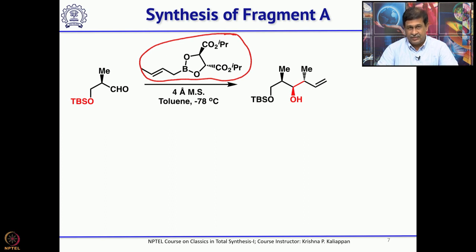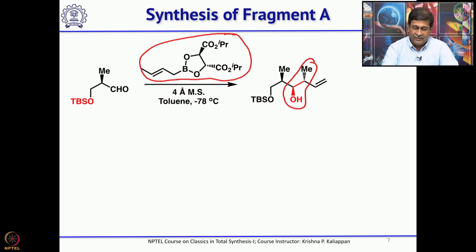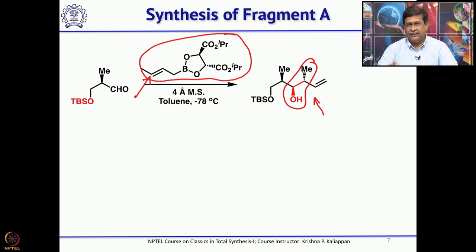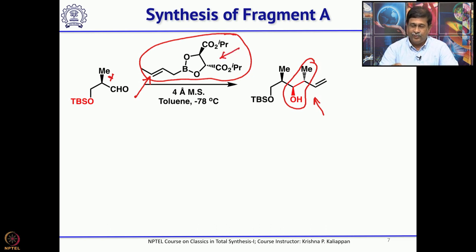It is known and was reported by Roush that if you start with trans-crotylborane, you will get the anti-aldol product, and if you start with the cis double bond, you will get the syn-aldol product. This is a very well-established aldol reaction. Based on one chiral center and using this chiral auxiliary, you could establish three chiral centers.